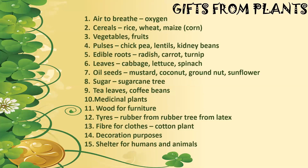Second, we have cereals — your everyday food — which can be in the form of rice, wheat, maize (also known as corn), or even barley. We also get vegetables and fruits from plants. We get pulses as well, such as chickpea, lentils, and kidney beans — these are crops grown by farmers. We also have edible roots from plants like radish, carrot, and turnip — they grow underground but are edible.